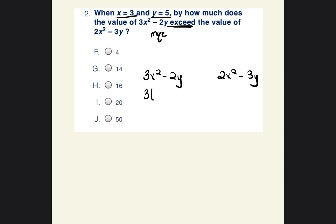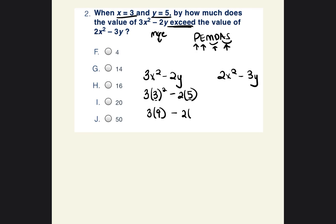Where we see x, we put 3, and we put 5 in for y. When solving this, we follow the order of operations — PEMDAS: parentheses, then exponents, multiply or divide, then add or subtract, whichever comes first. Because there's no action to take within the parentheses, we move on to exponents. 3 squared is 3 times 3, which is 9. So we have 3 times 9 minus 2 times 5.